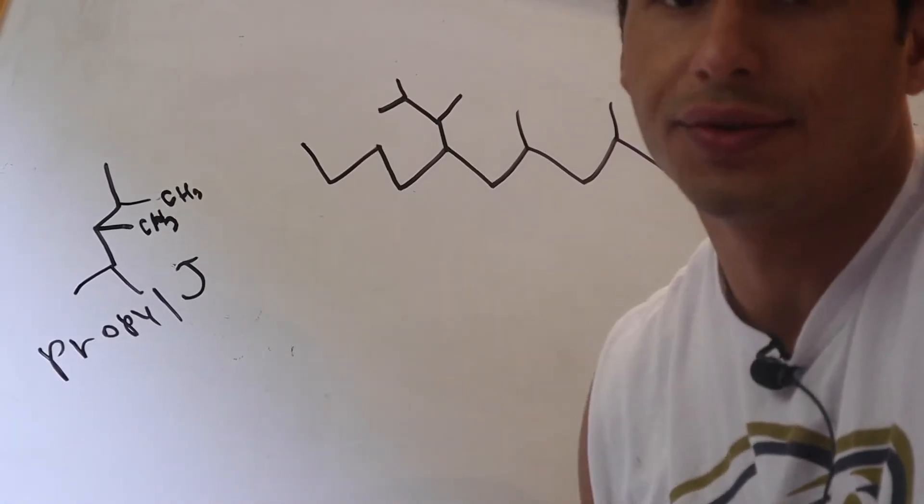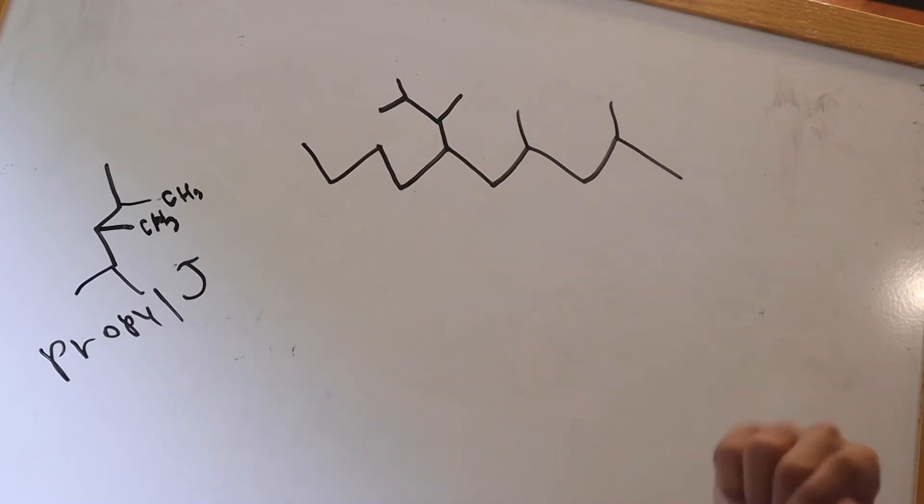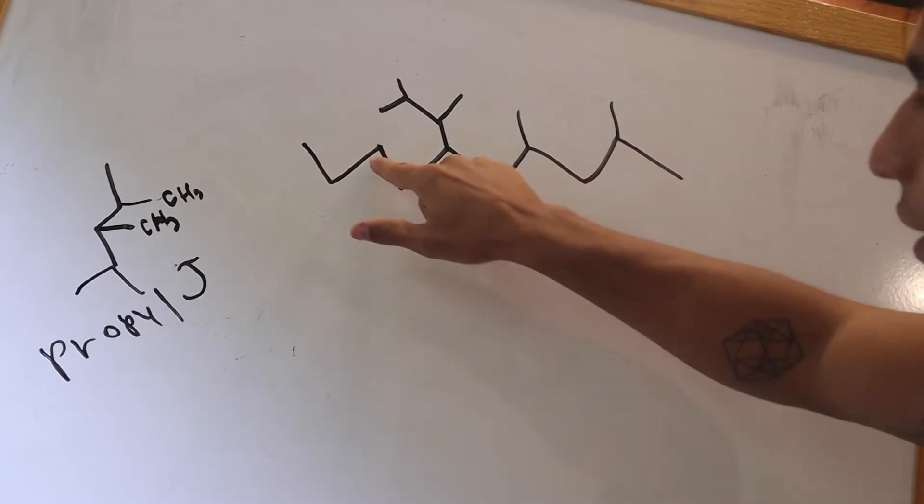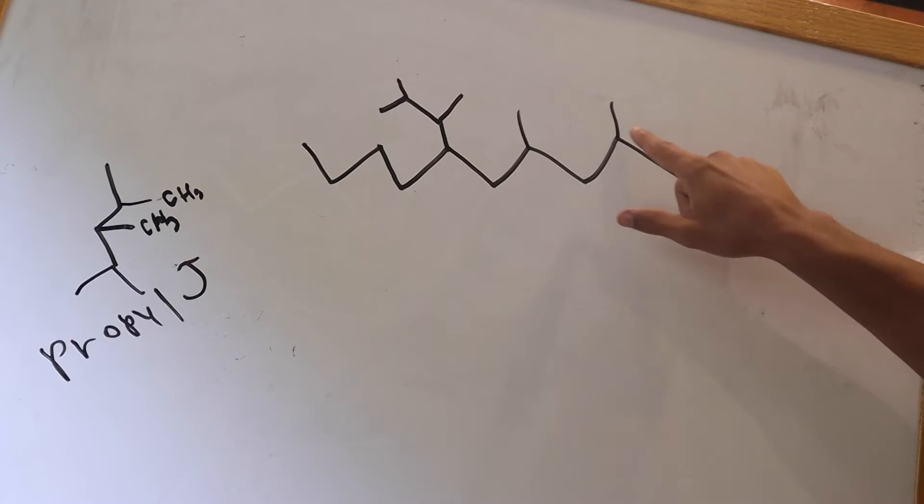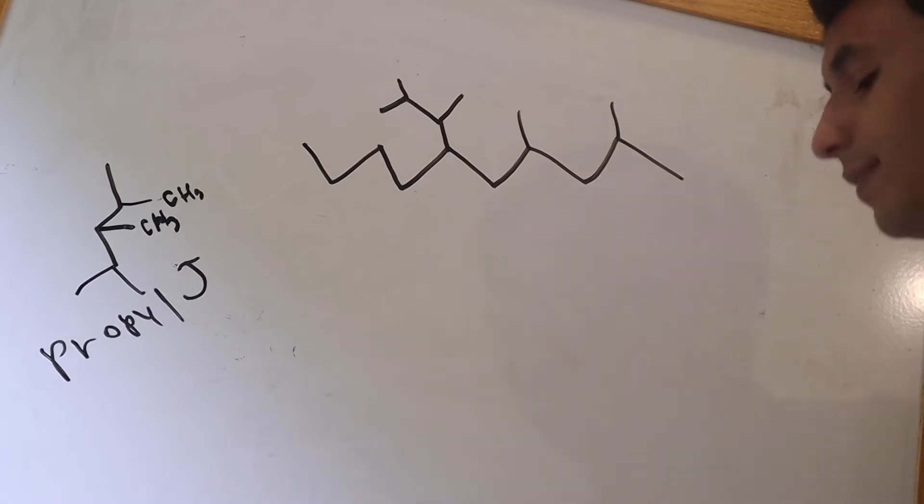So how we're going to solve this one. This structure is given to us, ignore that for now, but we're going to count the carbons: 1, 2, 3, 4, 5, 6, 7, 8, 9, 10. We look for the functional groups and you have a methyl group here, methyl group here, and over here you have a propyl group.